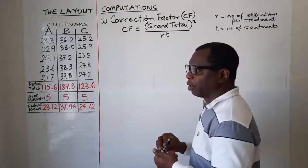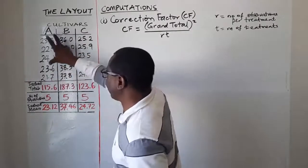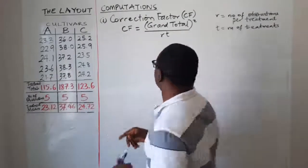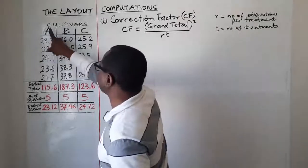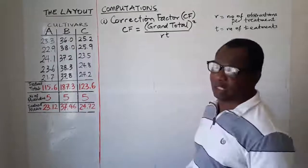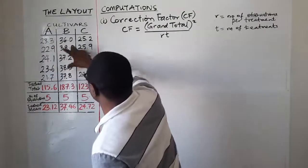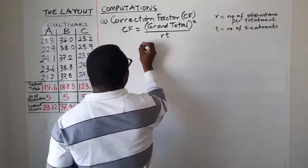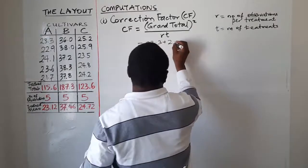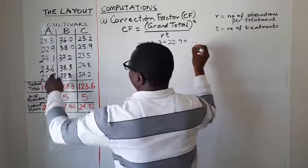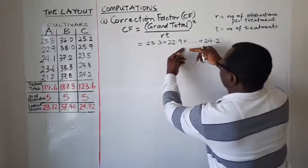And t stands for the number of treatments. In this example we have three treatments A, B, and C, each with five observations, so r equals five and t equals three. The grand total is obtained by adding together all the individual items — that is 23.3 plus 22.9 plus all the other values right through to the last one, 24.2 — everything added together gives you the grand total.